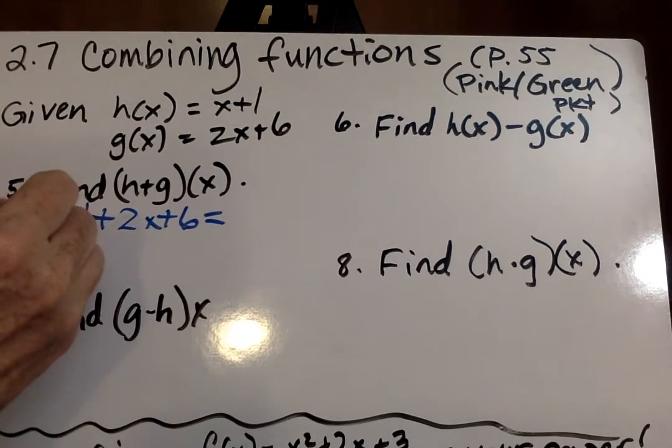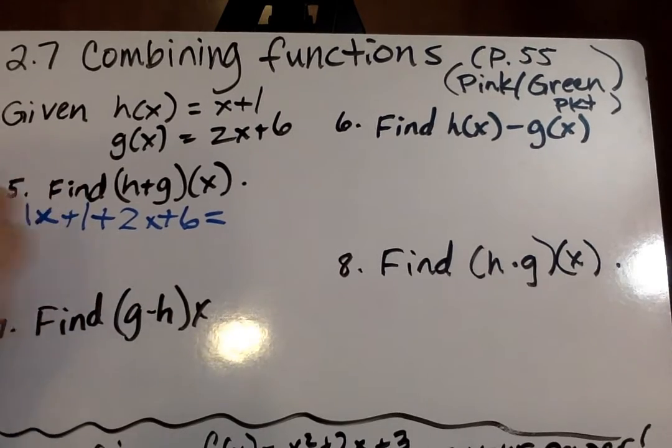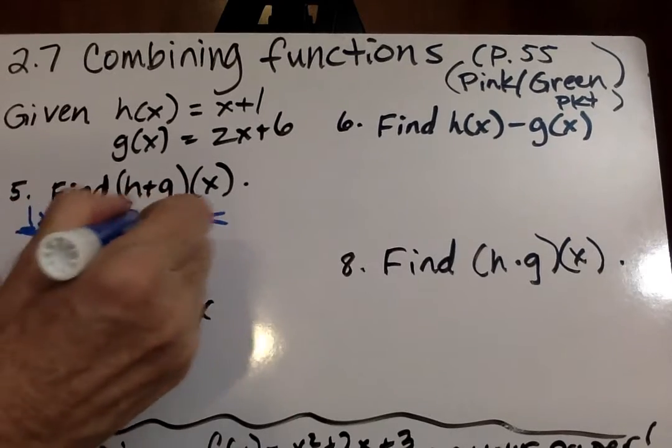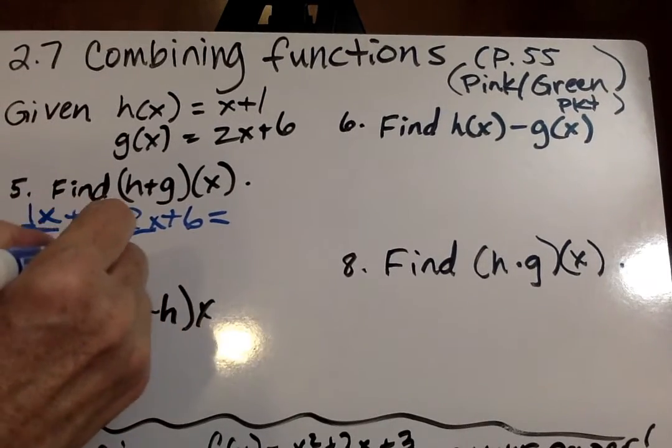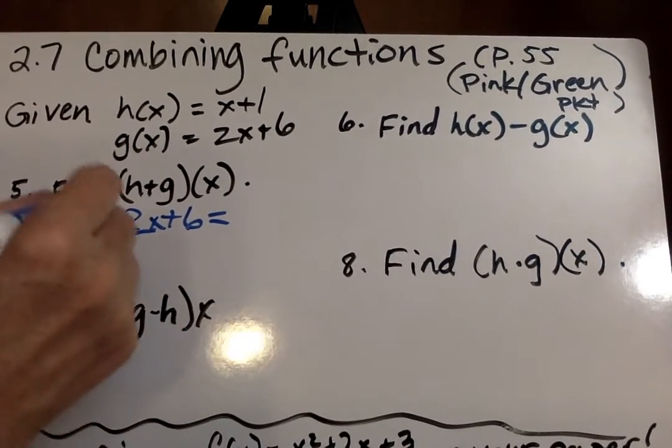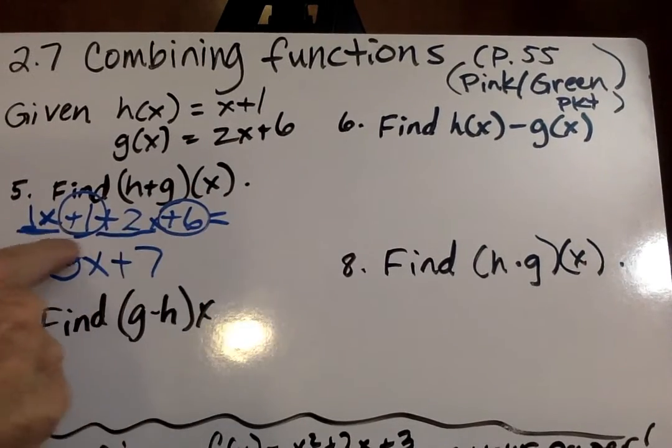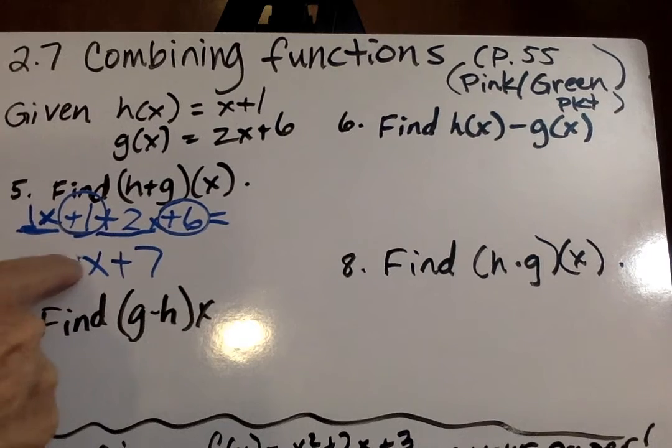Now I'm going to combine like terms when it's just x, it's really a 1x. So we add 1x, always watch your sign in front of it, plus 2x, that's 3x. And then 1 plus 6, so the answer is 3x plus 7.